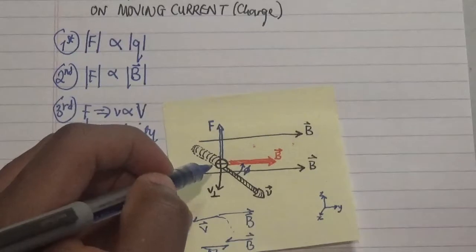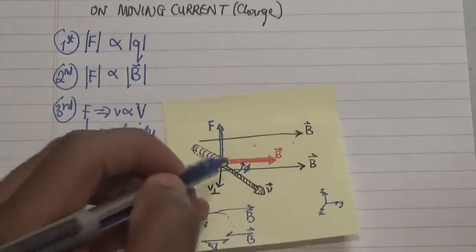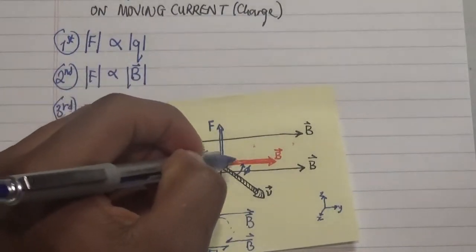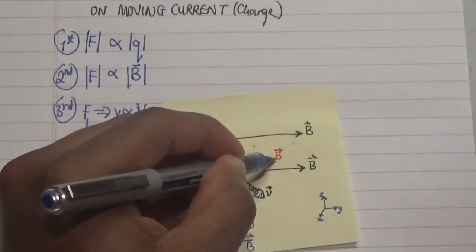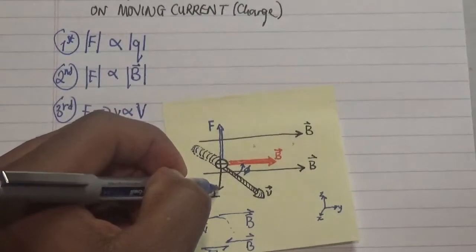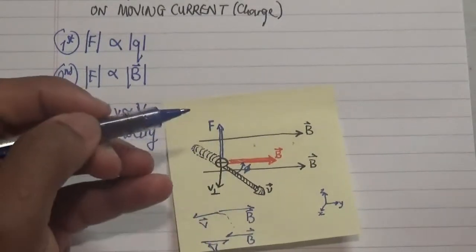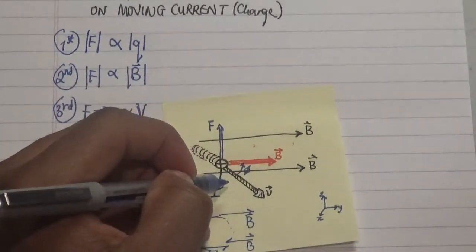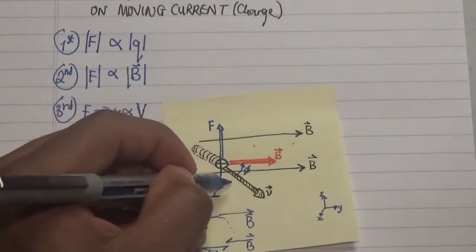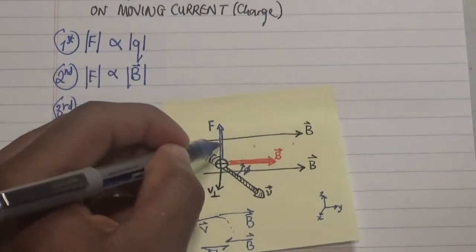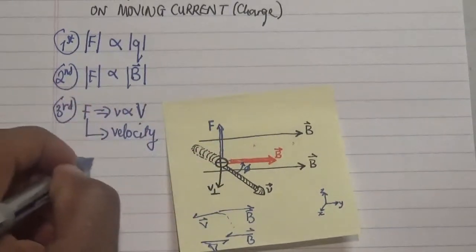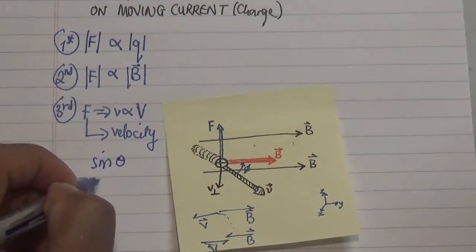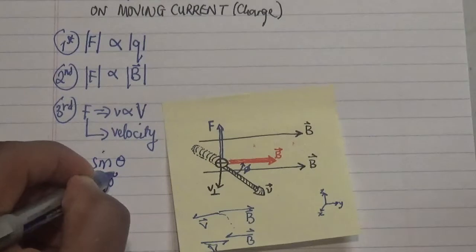We need to take note that the magnetic force F is perpendicular to both the magnetic field and the velocity. This generates a maximum force in the process. As we increase the angle, we increase the force — and when the sine of that angle equals 90 degrees, we achieve maximum force.